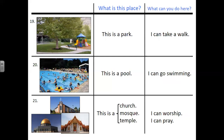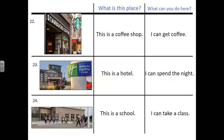Number twenty-one. What is this place? This is a church. Or this is a mosque. This is a temple. What can you do here? I can worship. I can pray. Number twenty-two. What is this place? This is a coffee shop. What can you do here? I can get coffee. Number twenty-three. What is this place? This is a hotel. What can you do here? I can spend the night.